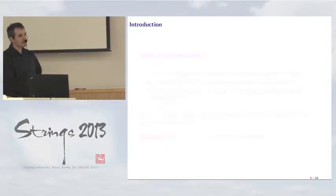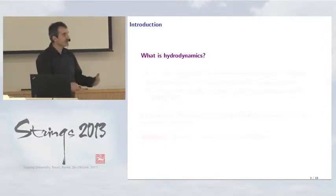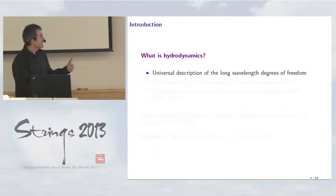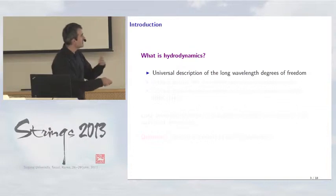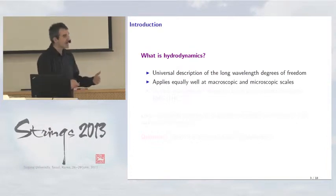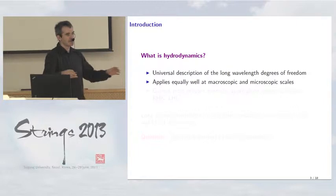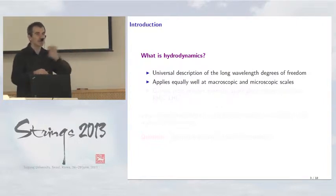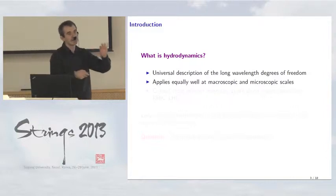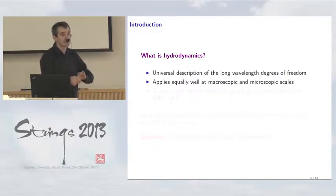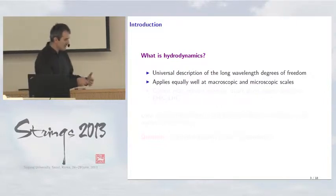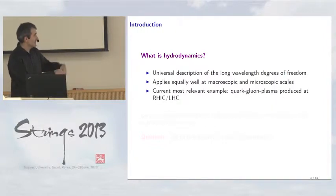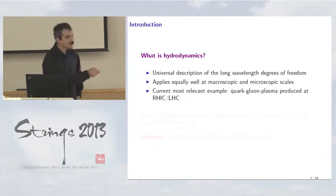What is hydrodynamics? It's a universal description of long-wavelength degrees of freedom in any system. It applies equally well at macroscopic and microscopic scales. The universality means the general structure of the hydrodynamic description is the same for all systems. What changes are only some numerical coefficients — the transport coefficients — which depend on the concrete microscopic theory. Currently the most relevant example for our community is the quark-gluon plasma produced at RHIC and LHC.